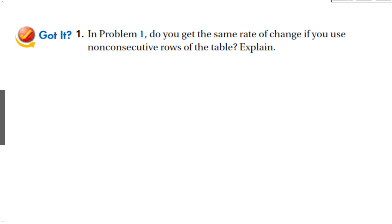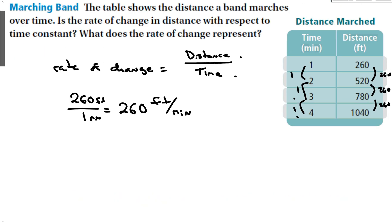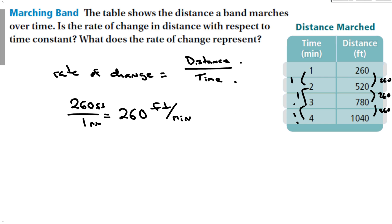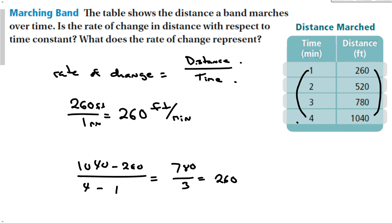Do you get the same rate of change if you use non-consecutive rows of the table? Yes, because if we look at two non-consecutive rows, we're just subtracting bigger numbers. Let's use the first and last rows: 1040 minus 260 over 4 minus 1 gives us 780 over 3, which equals 260. So no matter which two rows we use to calculate our rate of change, it is always the same — it is constant.